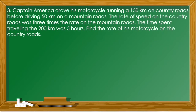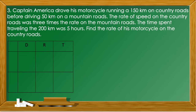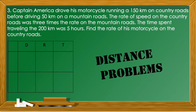Problem number three: Captain America drove his motorcycle 150 kilometers on country roads before driving 50 kilometers on mountain roads. The rate of speed on country roads was three times the rate on mountain roads. The total time spent traveling 200 kilometers was five hours. Find the rate of his motorcycle on the country roads. Let's set up a table — this is a distance problem using the formula d = r × t.